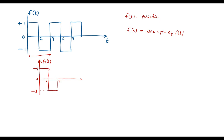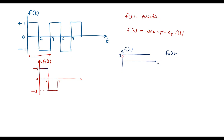Now we need to find the Laplace transform of f₁(t). In f₁(t), we can observe that at t = 0, there exists one step signal. I will try to split this signal. Let me consider the first signal as fₐ(t), which is a step signal. The magnitude of this step signal is 1, so fₐ(t) = u(t).